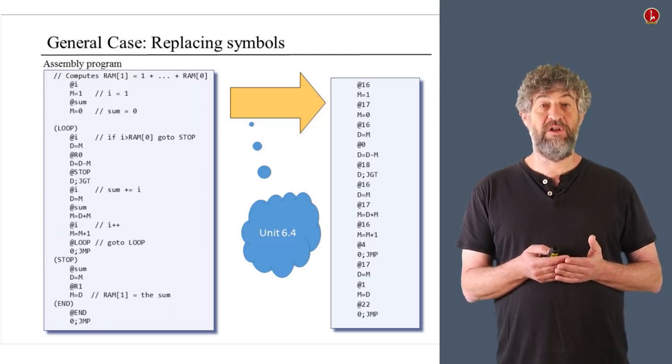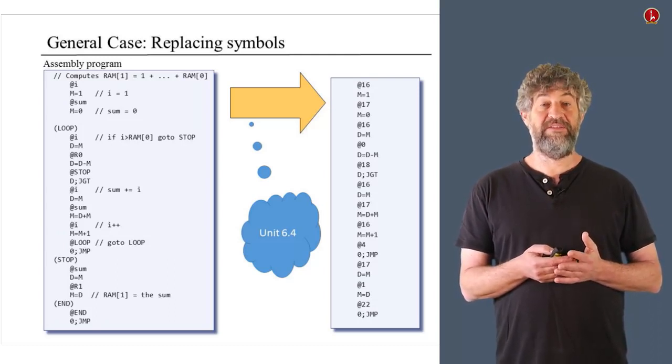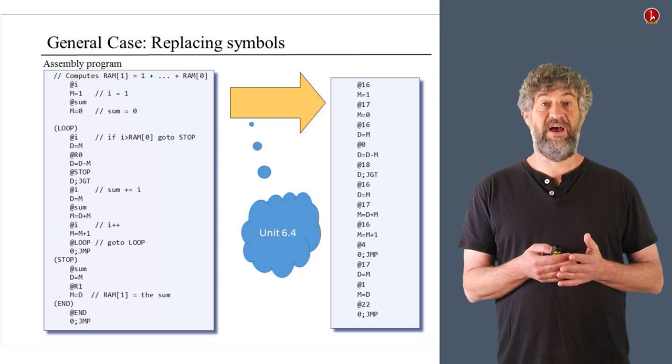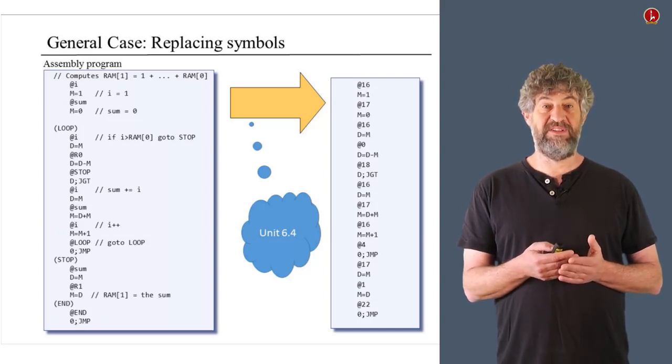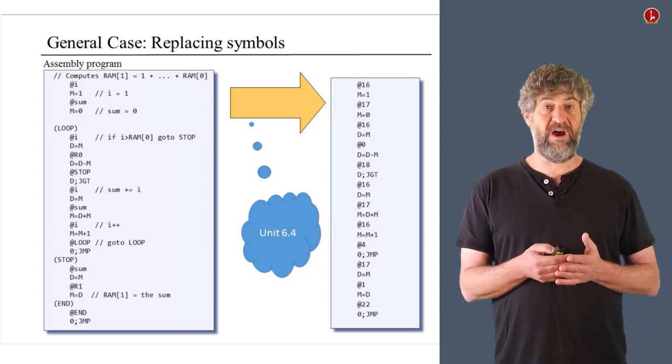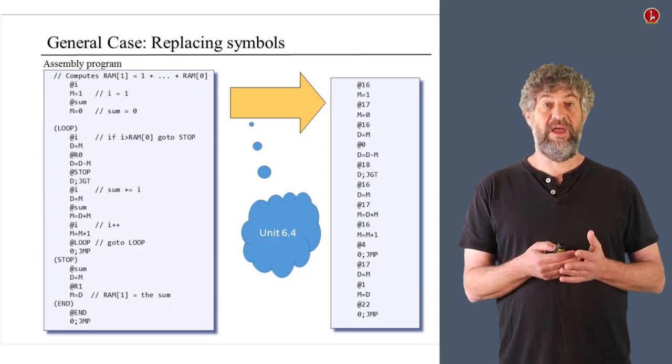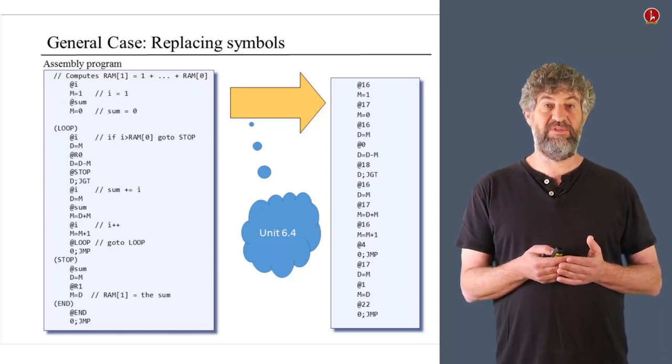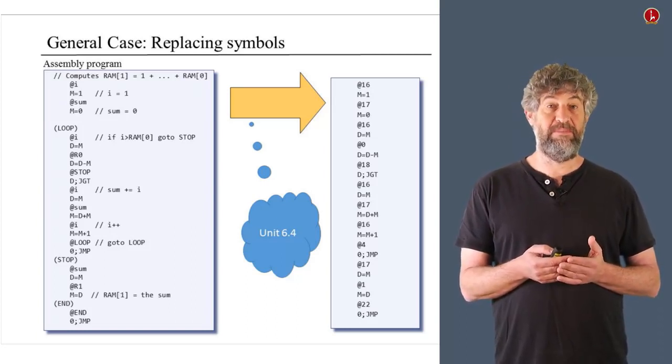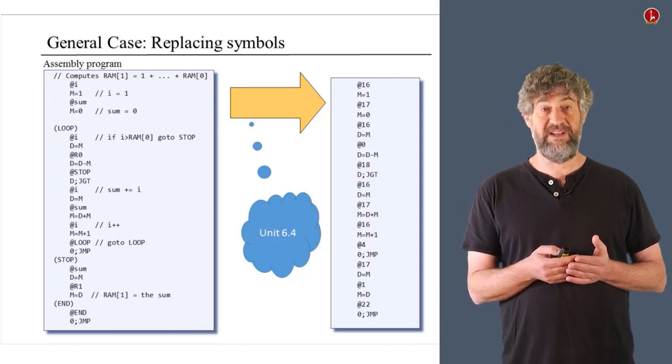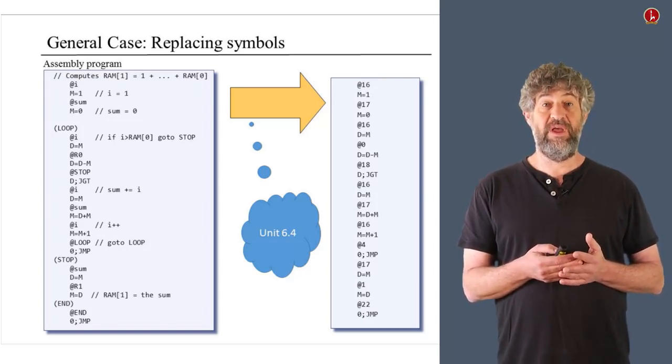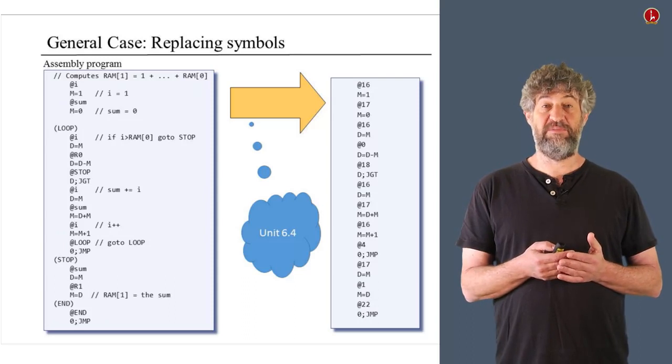So how do you eliminate the symbols? Well, we devoted all of unit 6.4 to explain the exact conventions in the hack assembly language of what symbols mean and what kind of symbols there are. As you may recall, there are basically symbols that are variables. There are symbols that are labels in the program. And there are also some predefined symbols. And there were exact rules where each one was allocated and how you specify them.